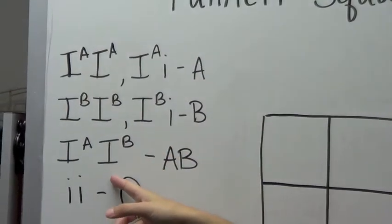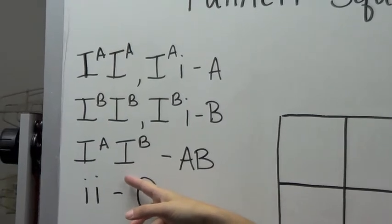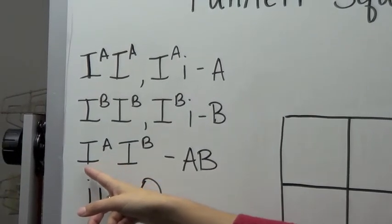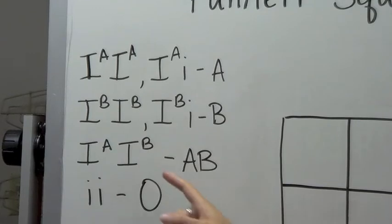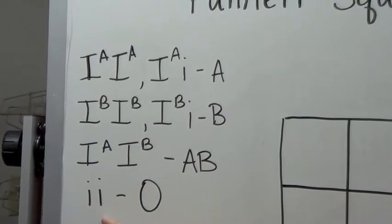Type AB blood is a co-dominant trait only if you get an A allele from one parent and a B allele from the other. And if you have type O blood, that's the result of two recessive alleles.